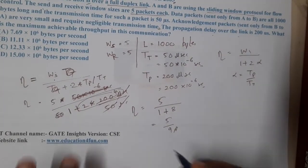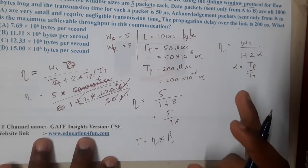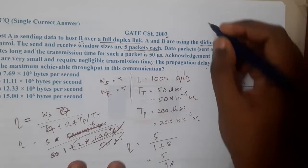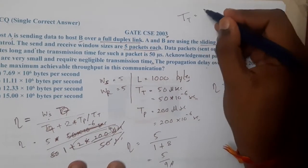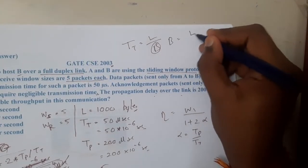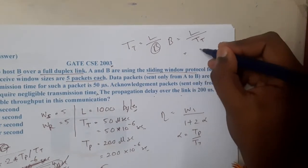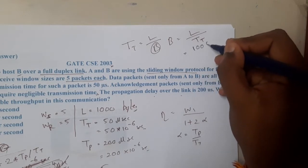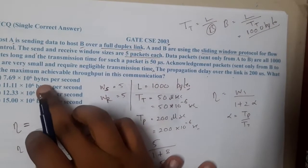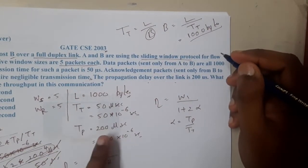To find throughput, we need efficiency × bandwidth. However, the question does not give bandwidth directly — it gave L (packet length) and TT. We know TT = L/B, so bandwidth B = L/TT. The packet length is 1000 bytes.